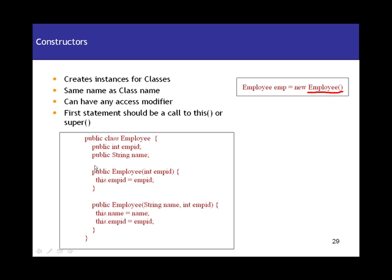If you have a look at this class, you've got two constructors here. You can have a number of overloaded constructors in your class. Overloaded means having the same name but with different arguments. This constructor has one argument of type integer, whereas this constructor has two arguments — one of type string and another of type integer. We'll be talking about overloading and overriding later in the session.